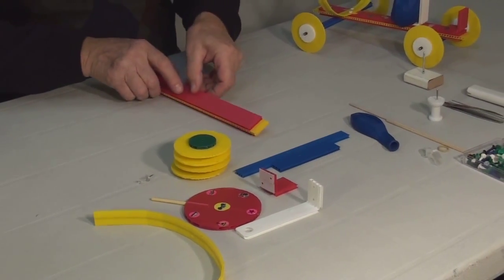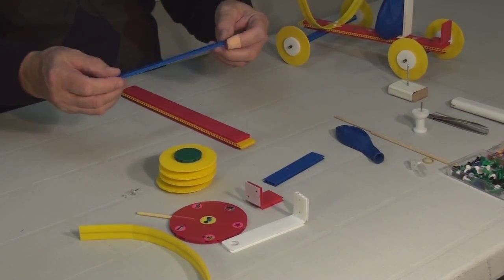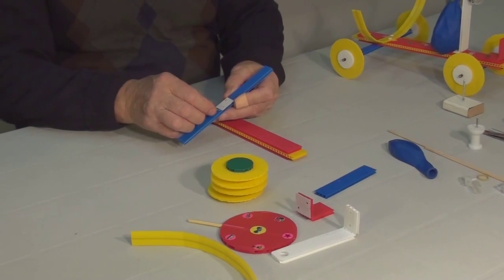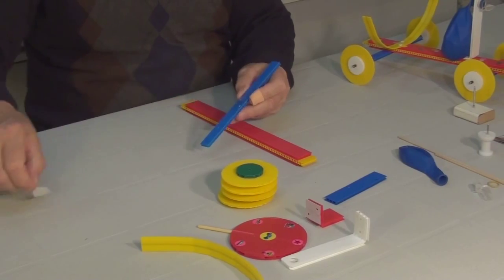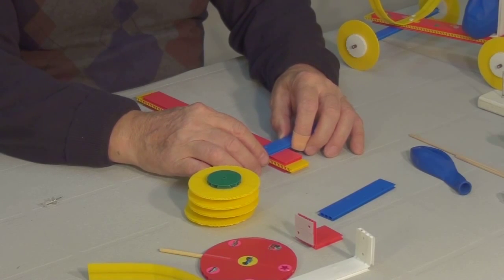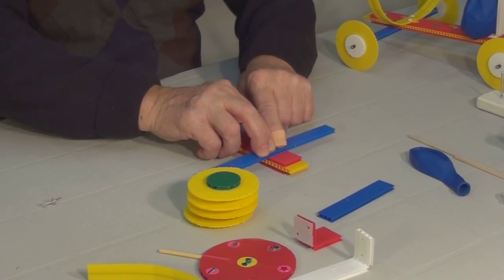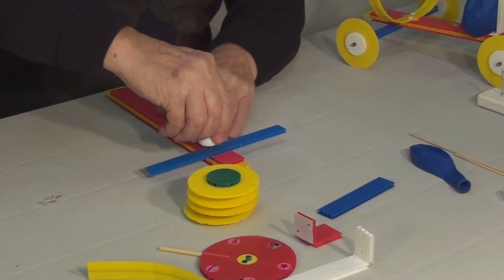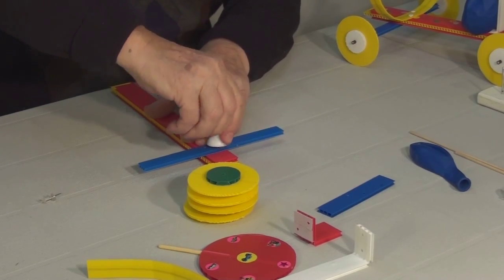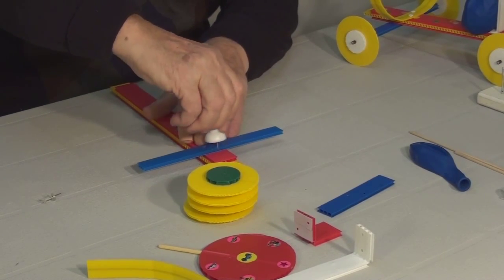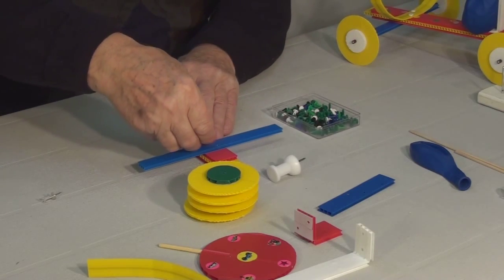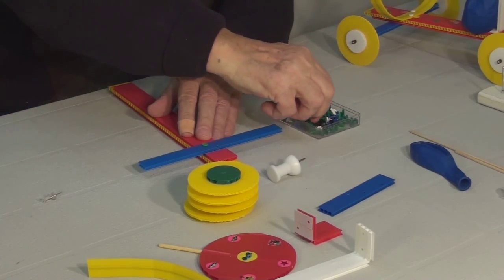Next, we need to attach the axle plates to our base. We have one long and one short axle plates. Remove the adhesive backing and place the long plate approximately one and a half inches or four to five centimeters from the end. Make two holes in the base using the holes on the axle plate as your guide. Insert two clips. Now the strip won't fall off.